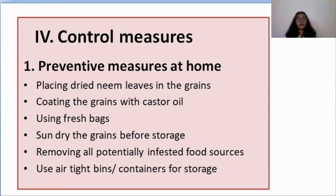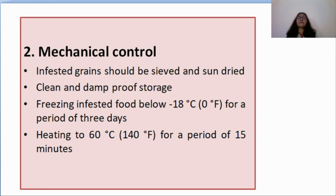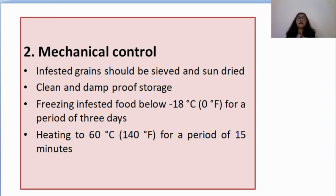The second method is mechanical control. Infested grains should be seized and sun dried. The storehouse or store bins should be clean and damp-proof. Freezing the infested food below minus 18 degrees centigrade for a period of three days is quite effective — larvae and adults in the grain will be frozen and will not destroy it. Heating to 60 degrees centigrade for 15 minutes is also effective, as it kills all stages — egg, larvae, pupae, and adult — and the grain can then be stored under normal conditions.